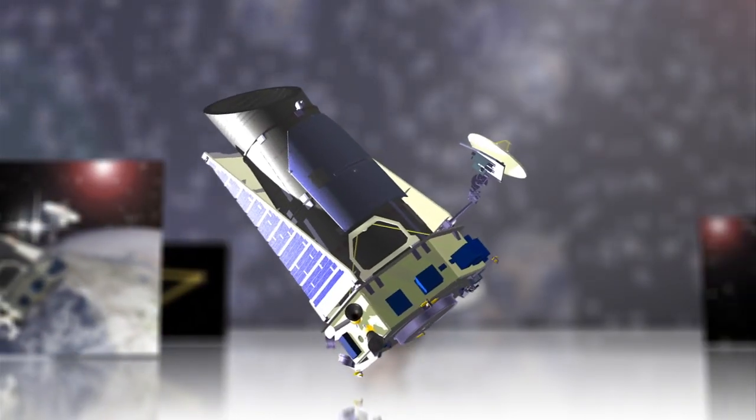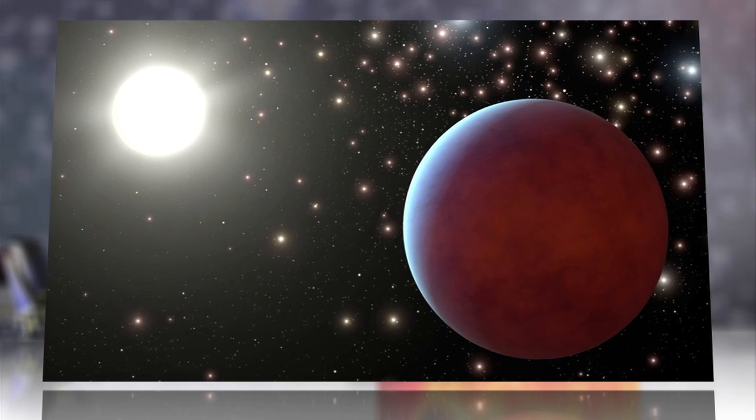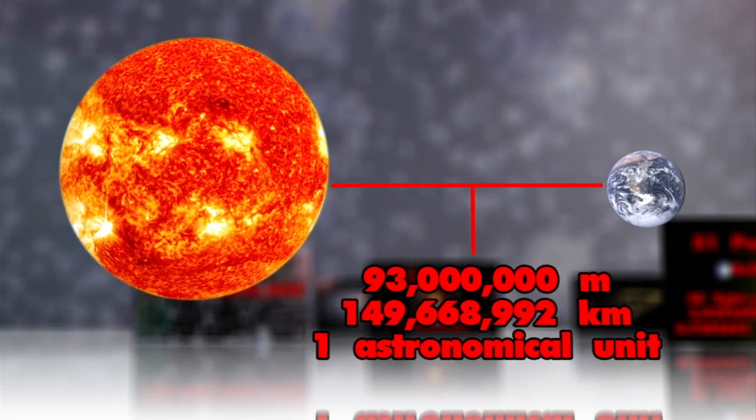Kepler finds planets that orbit very close to their home stars, and the new method seeks to find planets that orbit their stars at about twice the distance Earth orbits the Sun.